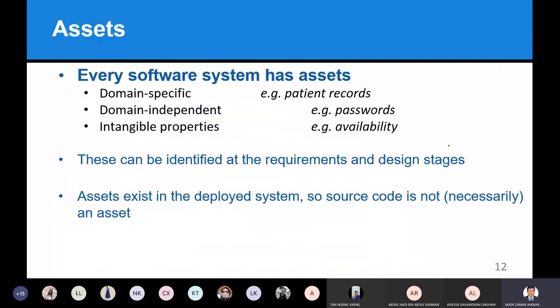Every software has assets. Assets are domain-specific, like patient details, and domain-independent, like passwords. The domain-independent assets — passwords — are highly important. For example, with Twitter or Facebook, if passwords stored somewhere get hacked, this has happened recently where millions and billions of passwords for Facebook and other social networks were leaked and posted on different websites. Anything that can damage the data inside the database or inside the system — including data properties like availability — falls under the category of assets.